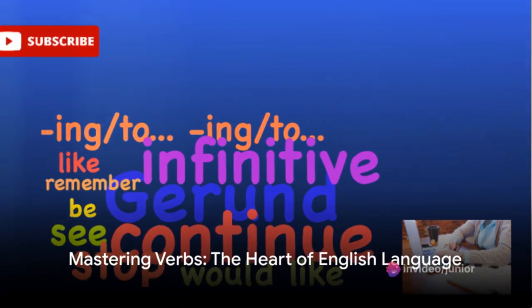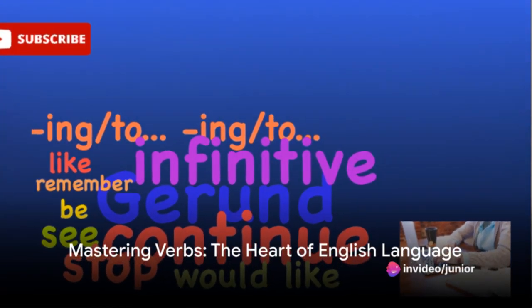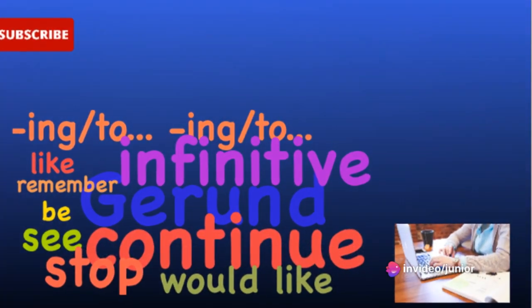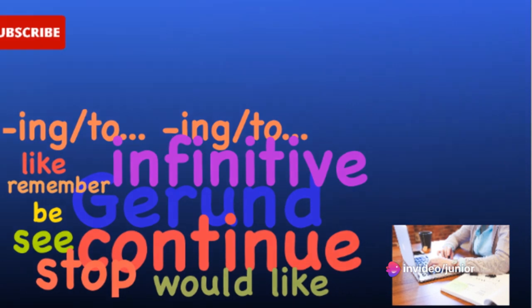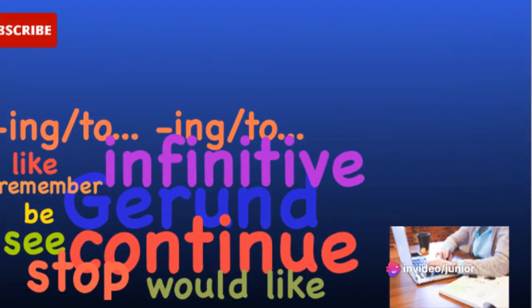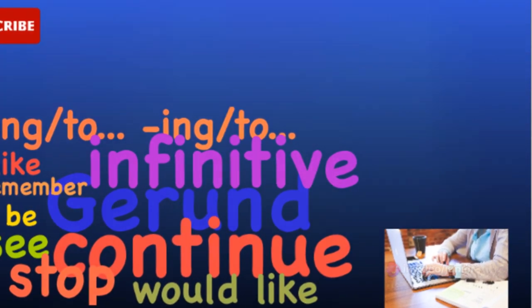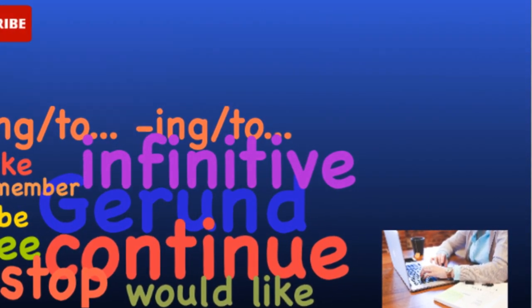Today, we're going to learn about verbs in English. Verbs are action words that tell us what the subject is doing. They can also express a state of being or occurrence.